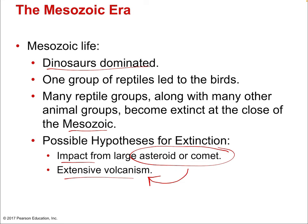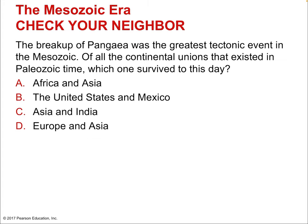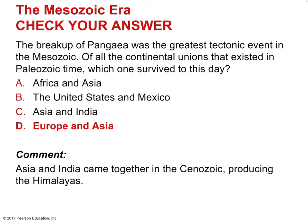The volcanism already made the world susceptible to a die-out, and then one dramatic impact event made the extinction so widespread. The breakup of Pangaea in the Mesozoic was the greatest tectonic event of that era. Of all the continental unions that existed in Paleozoic time, Europe and Asia survive to this day — they're still connected, having been together back in the Pangaea era and remaining so today.